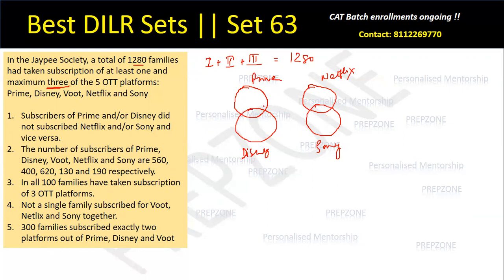Now what is given to me is the number of subscribers: Prime is 560, Disney is... Chauras Bees (420), Bootz is also Chauras Bees (420), Sony is 190 and Netflix is 130. So clearly, if you have done your Venn diagram basics well, you know that the sum of all individual sets equals: exactly one, plus twice of exactly two, plus thrice of exactly three, plus four times of exactly four, plus five times of exactly five. Adding all five values: 560 plus 420 gives 980, plus 420 gives 1,400, plus 190 gives 1,590, plus 130 gives 1,900. So the total sum is 1,900.